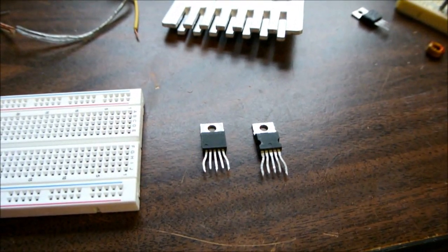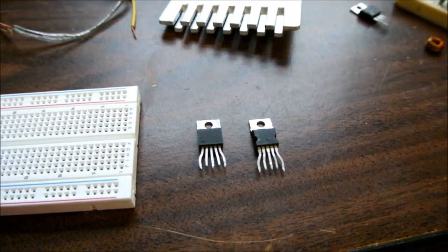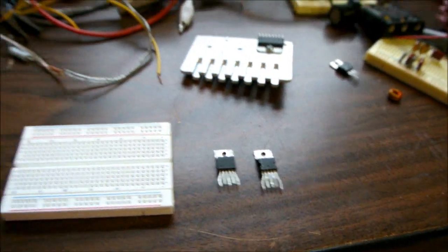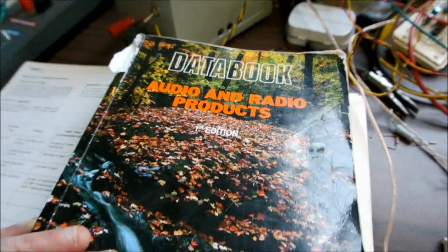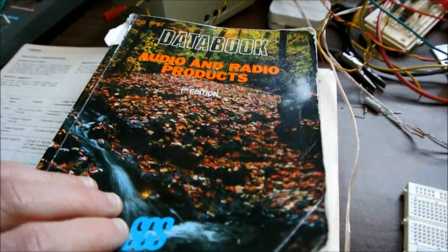First off, I'll talk about the TDA 2050. And here is my data book, Audio and Radio Products, from 1987. It's just a book full of data sheets of their different IC chips meant for audio and radio use.